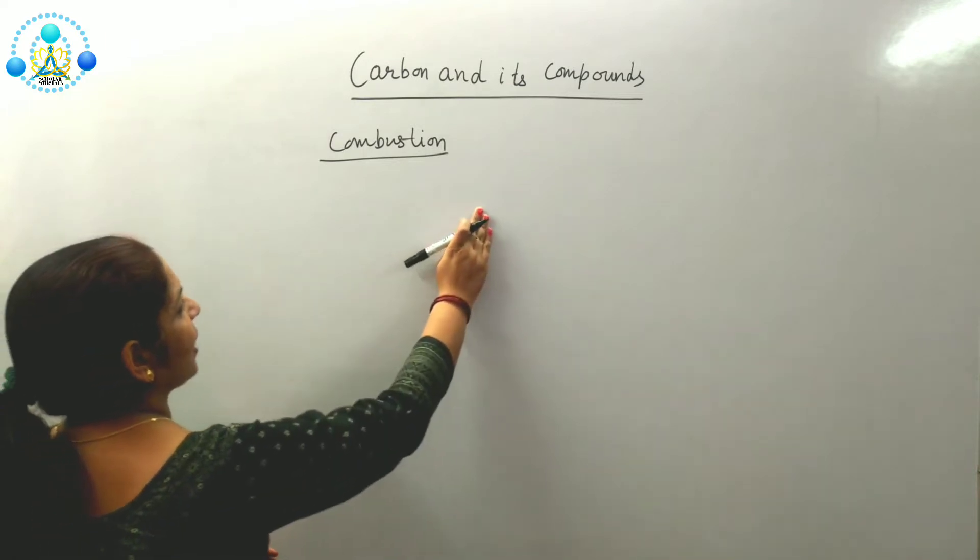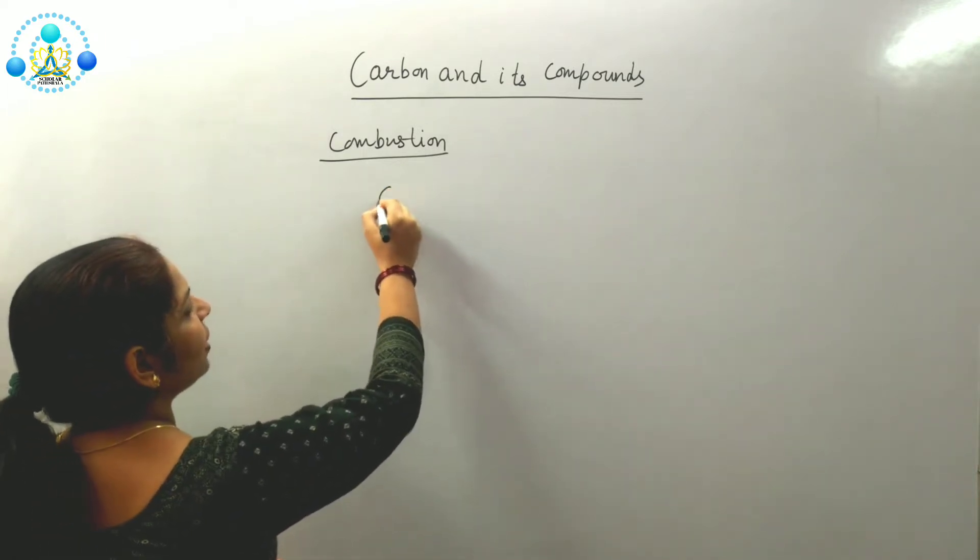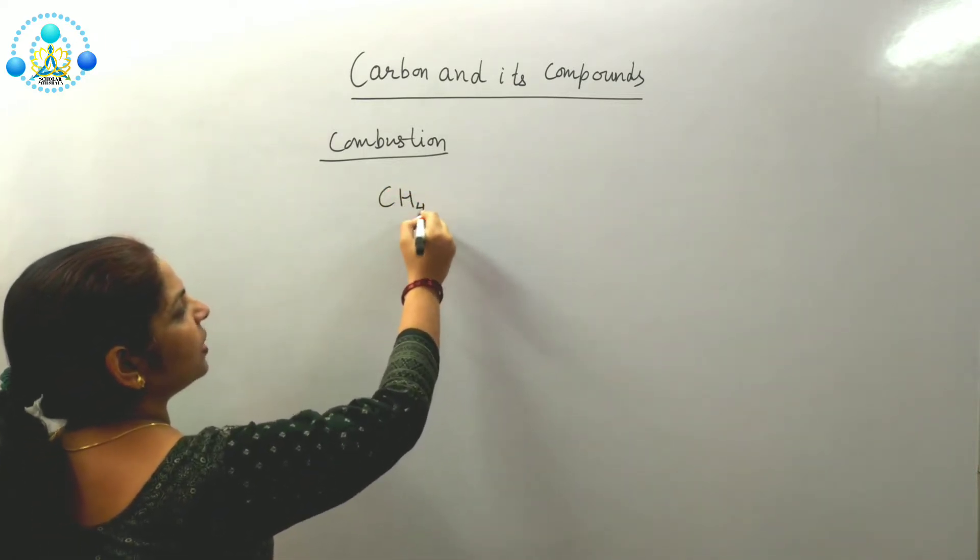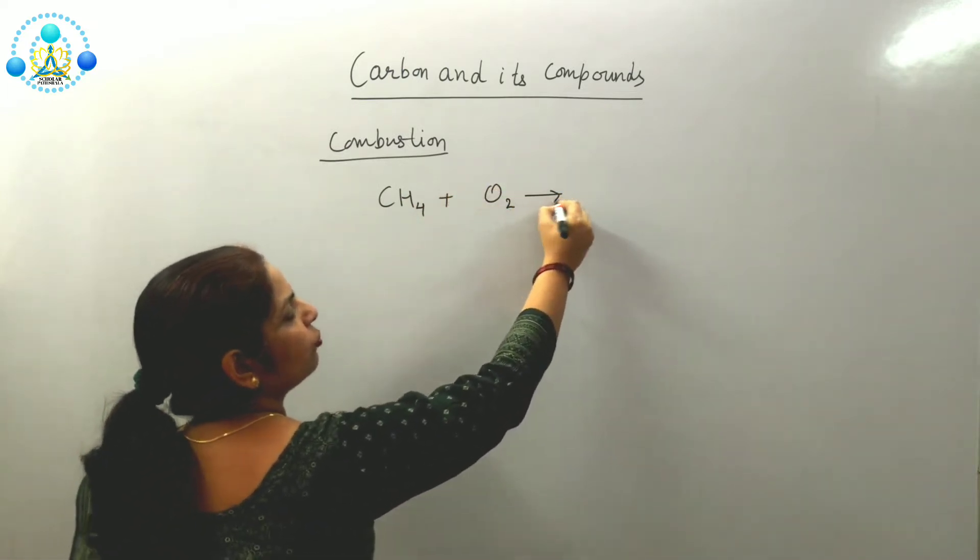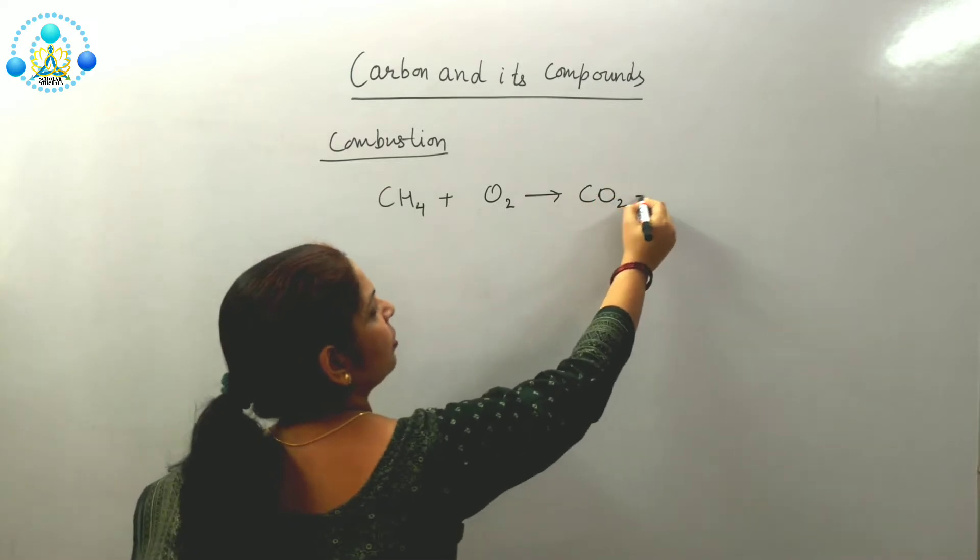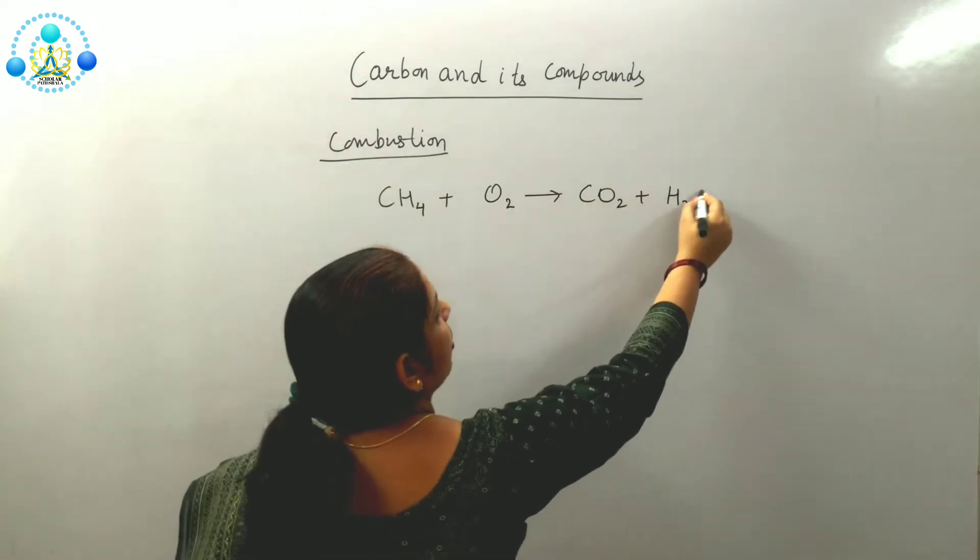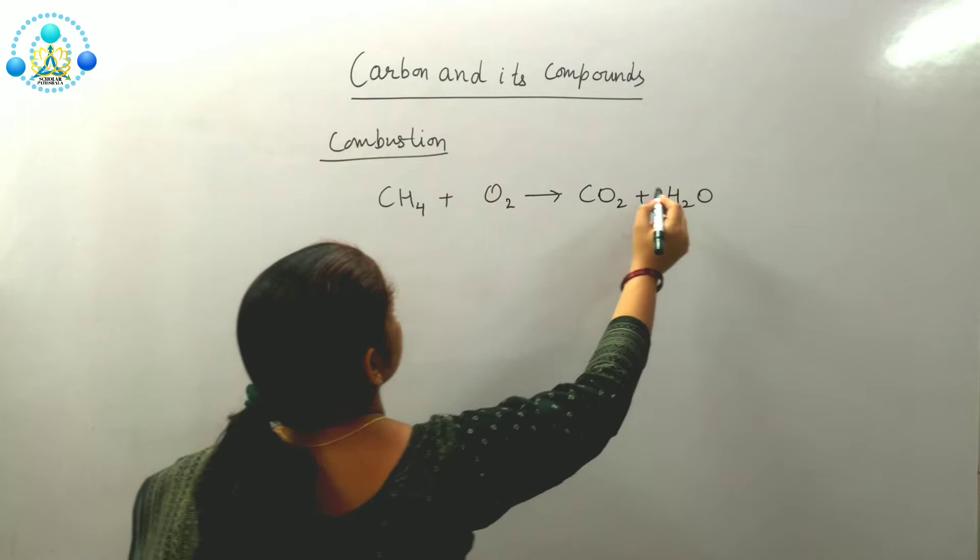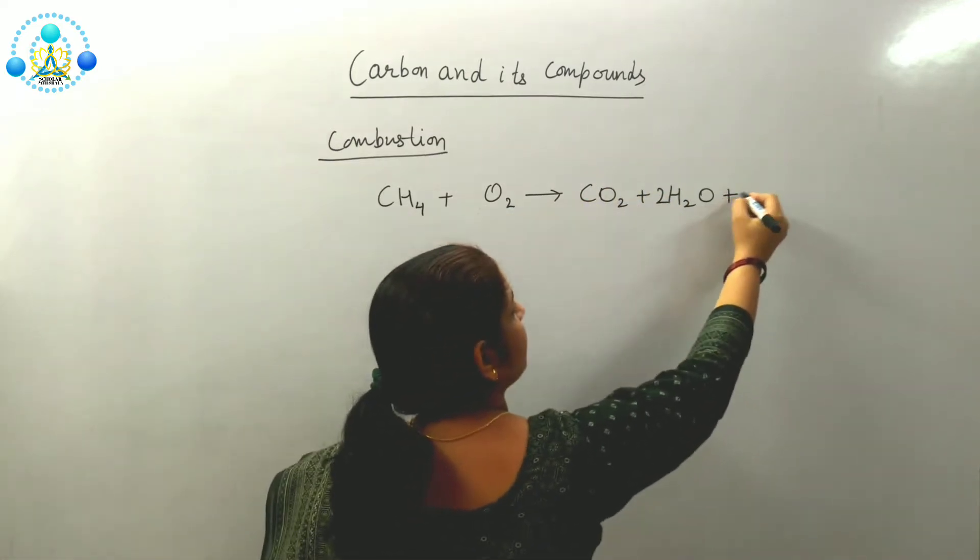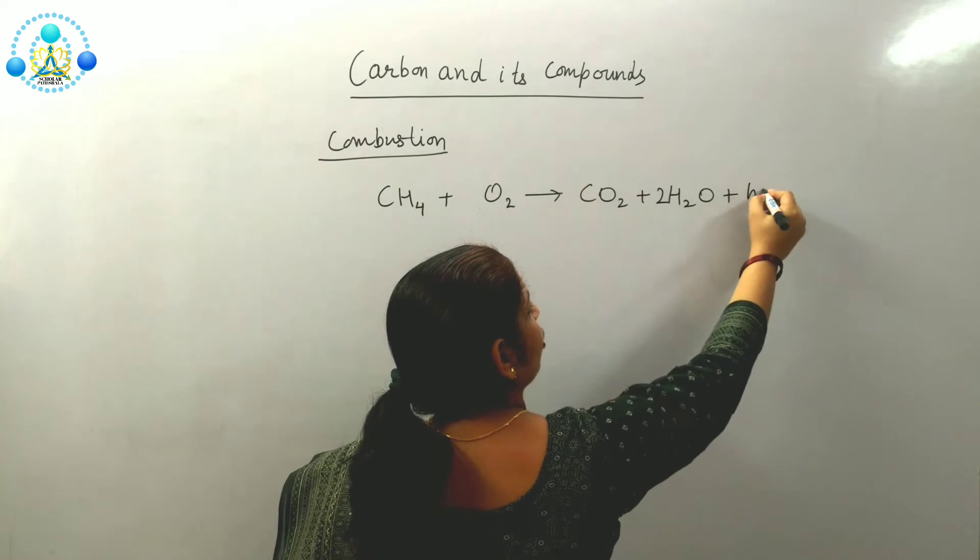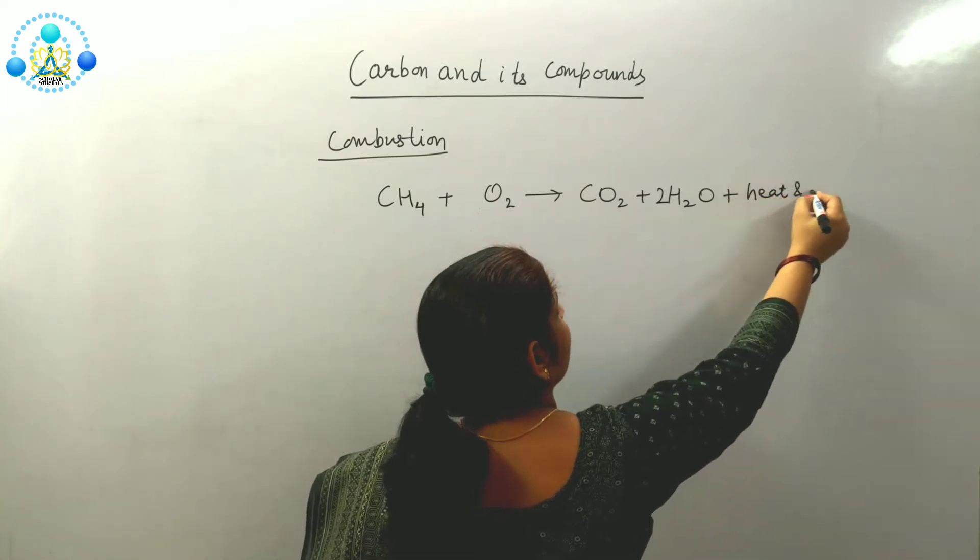We will write the reactions here. First we are having methane. Methane is saturated hydrocarbon. It burns in presence of oxygen to form carbon dioxide plus water. We can balance this equation. Along with carbon dioxide and water, it will give you heat and light.